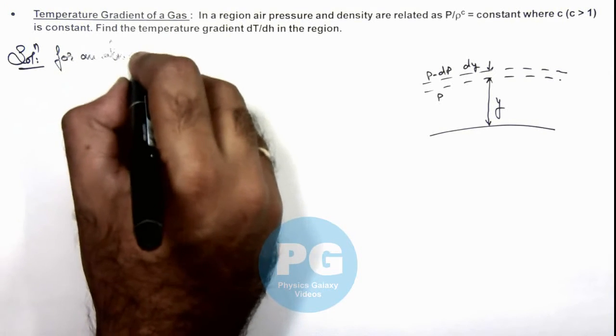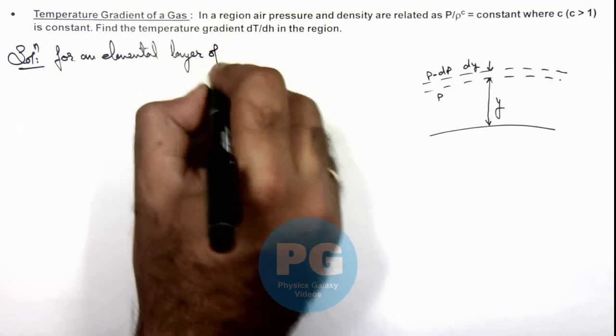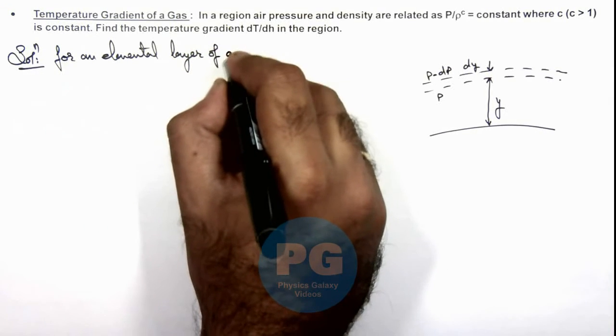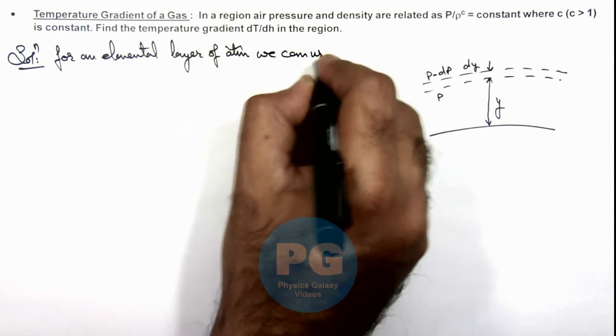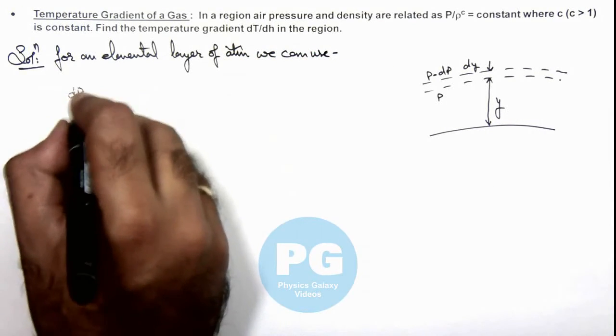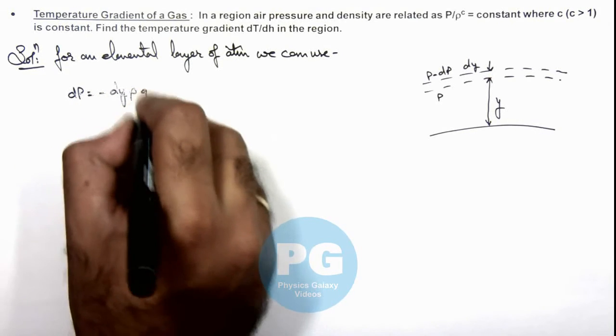And we can write for an elemental layer of atmosphere, we can use d p is equal to minus d y ro g.